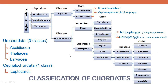Now we can go to the classification of chordates. Phylum Chordata is divided into three subphyla: Subphylum Urochordata, Subphylum Cephalochordata, and Subphylum Vertebrata. We belong to Subphylum Vertebrata. Subphylum Urochordata has been divided into three classes: Class Ascidiacea, Class Thaliacea, and Class Larvacea. Subphylum Cephalochordata is divided into one class — Leptocardii — as only one class is living now.